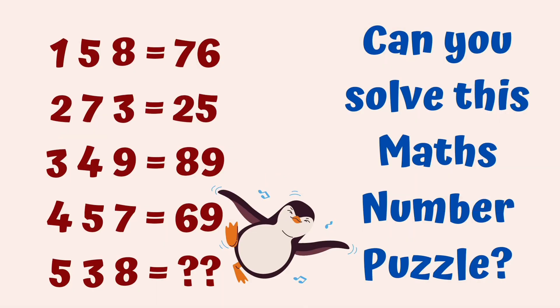Today's trick is: if 1, 5, 8 equals 76, 2, 7, 3 equals 25, 3, 4, 9 equals 89, and 4, 5, 7 equals 69, then what will be the value of 5, 3, 8?